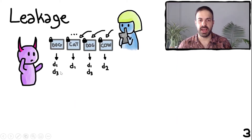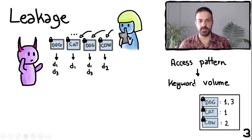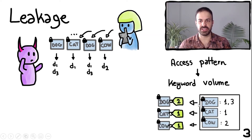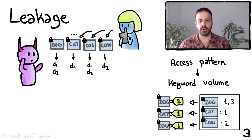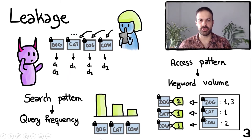Most efficient searchable encryption schemes have two types of leakage. First, the access pattern leakage, which refers to which documents are returned in response to a particular query. The adversary can use this access pattern to compute the keyword volume — the number of documents that match a particular query. For example, the query token generated with keyword 'dog' returns two documents, while tokens generated with 'cat' and 'cow' return a single document. Second, we have the search pattern leakage, which refers to leaking whether or not two queries are identical. The adversary can use this to compute the number of times the user has queried for a particular hidden keyword, which we call the query frequency.